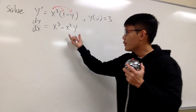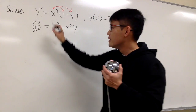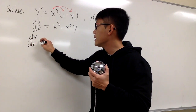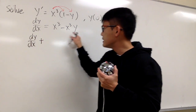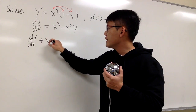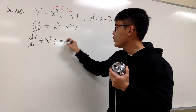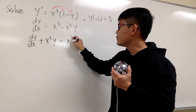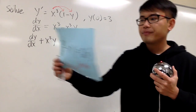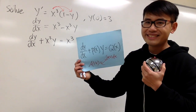Next, I would like to bring this term to the other side, so that we will have dy/dx plus x to the third power times y, and this is equal to x to the third power. Now we have the equation in the form that we want.